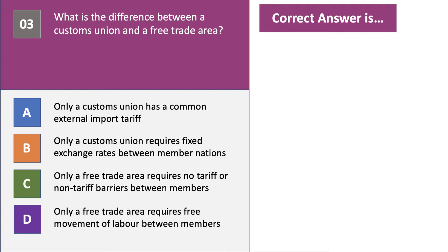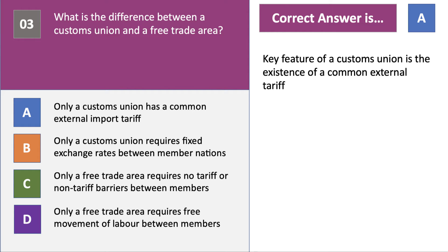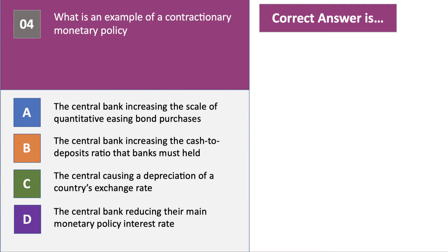Question three: what is the difference between a customs union and a free trade area? The fundamental difference is that a key feature of a customs union is the existence of a common external tariff — free trade within the union of nations, but a common external tariff applied to non-members.